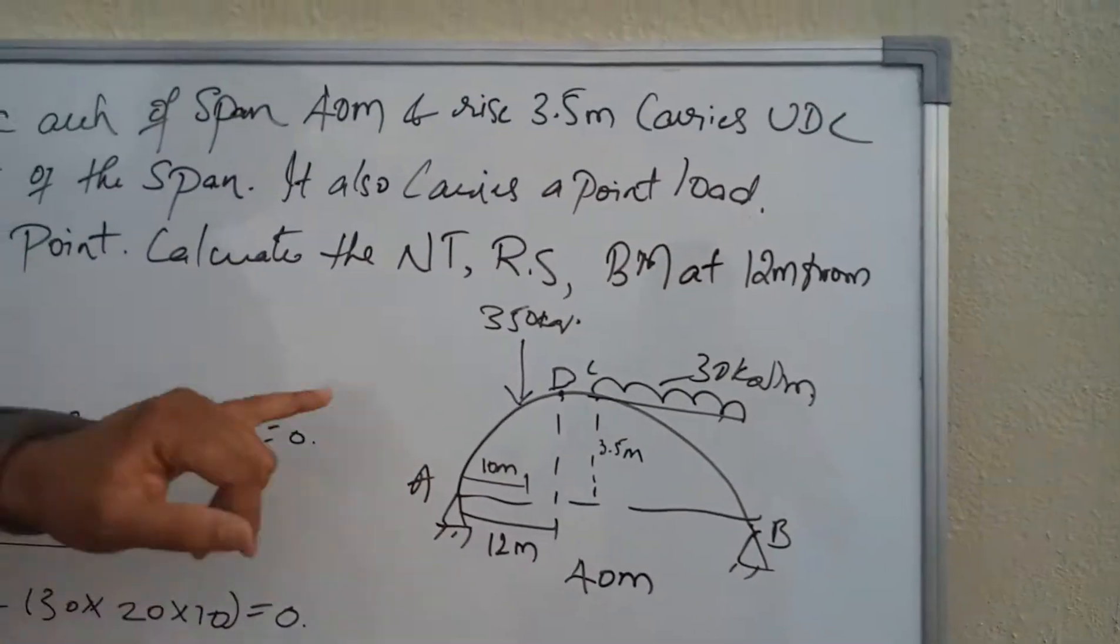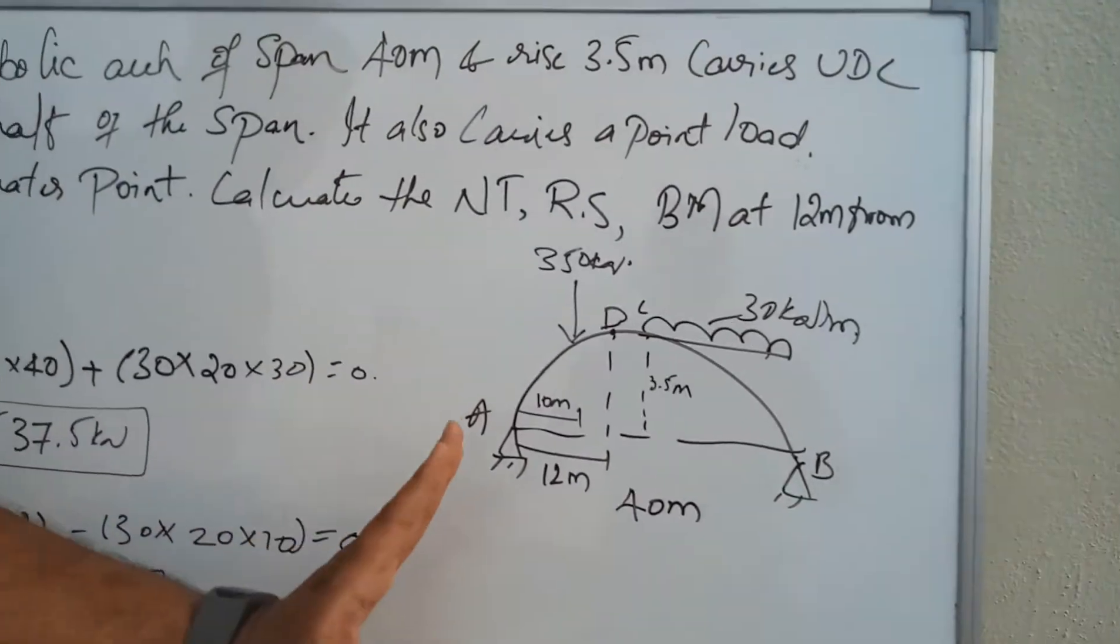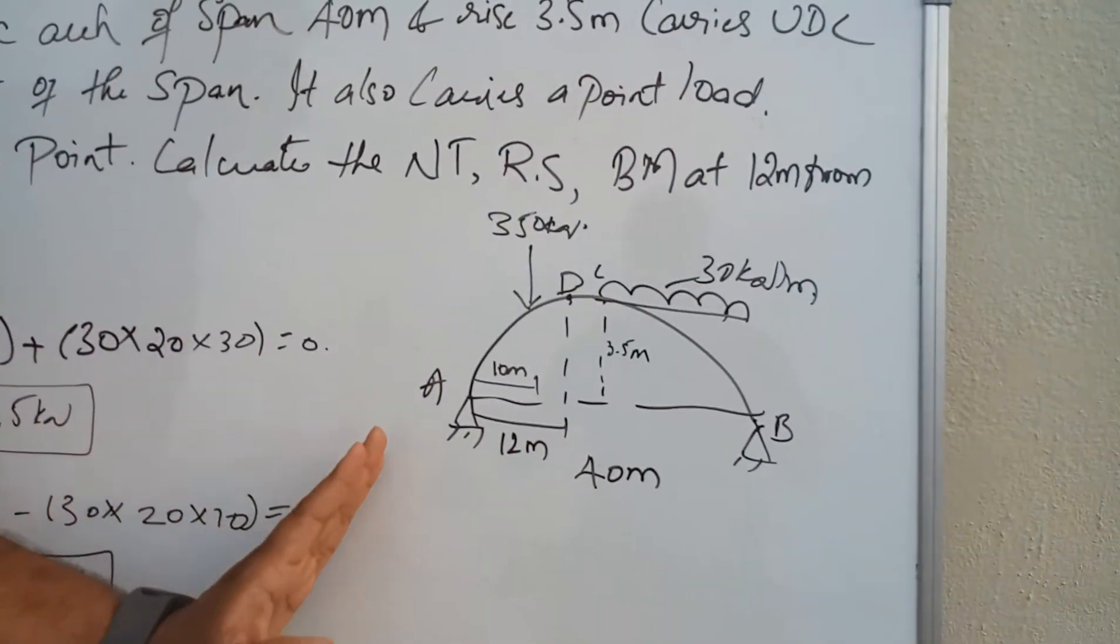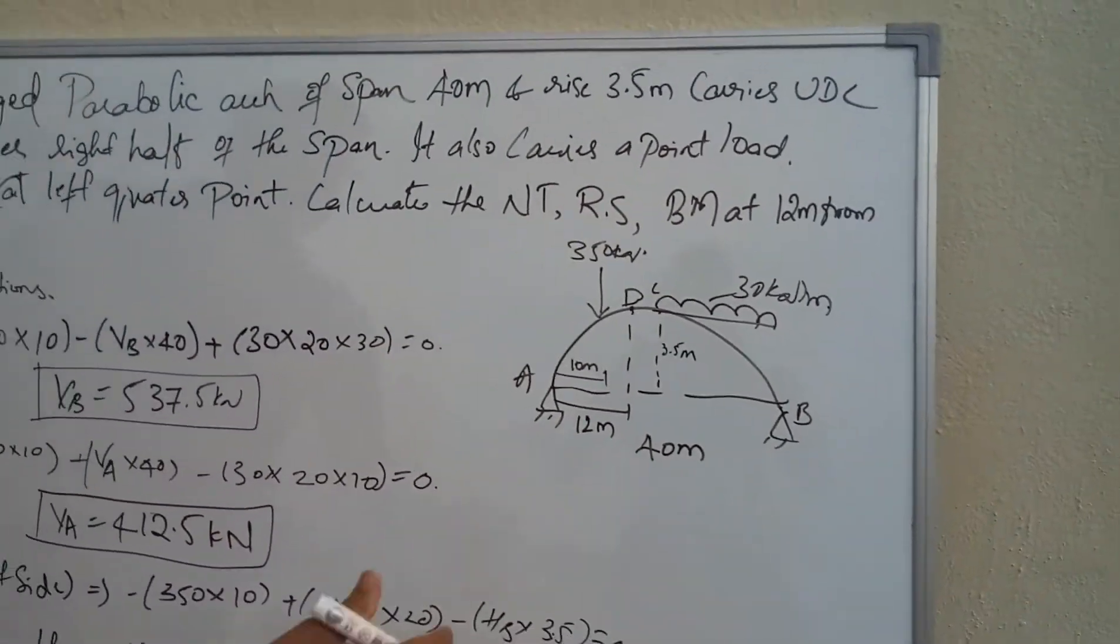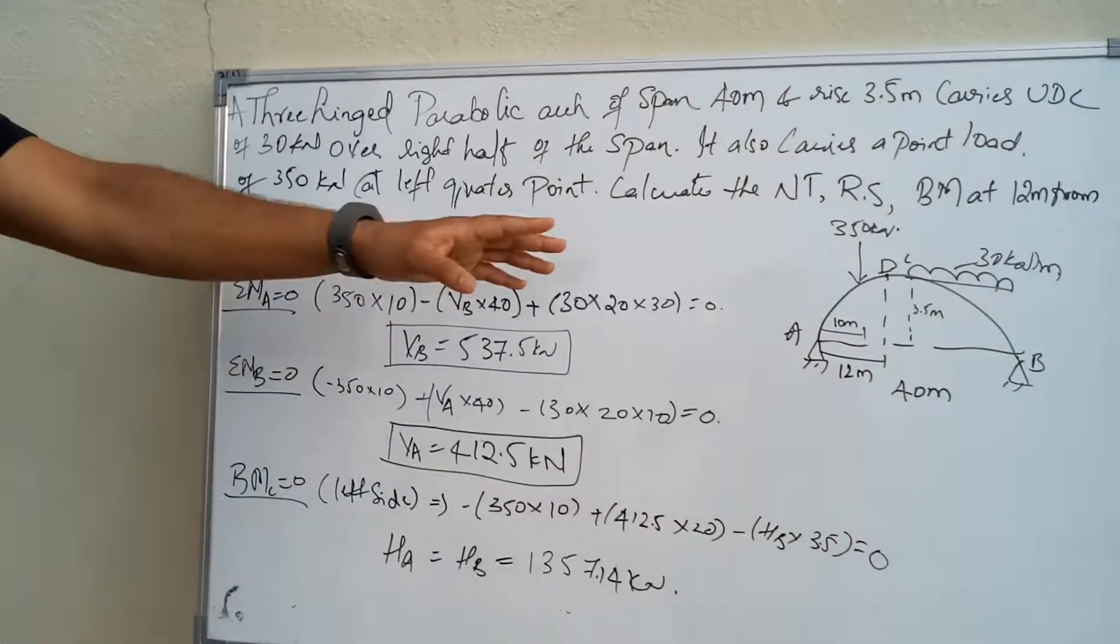The point load is 350 kilonewtons, located 12 meters from the left support. The first step is to find out VA, HA, VB, and HB. We already know how to find the reactions.